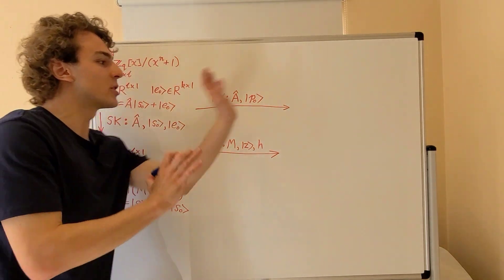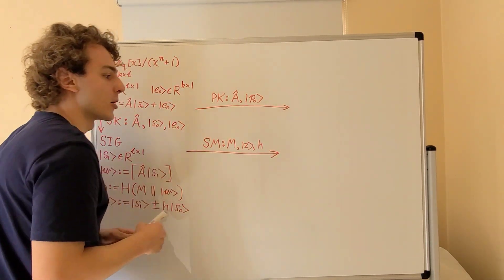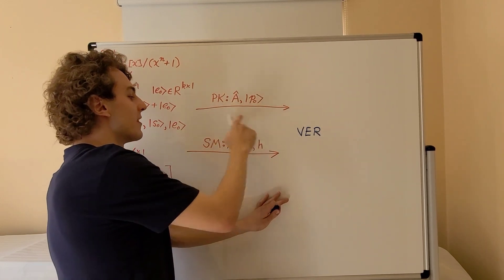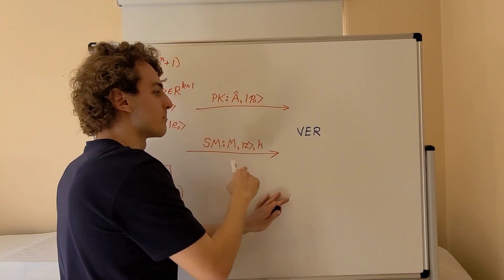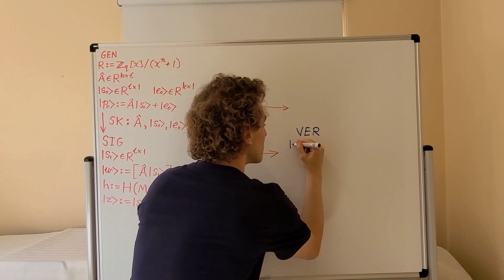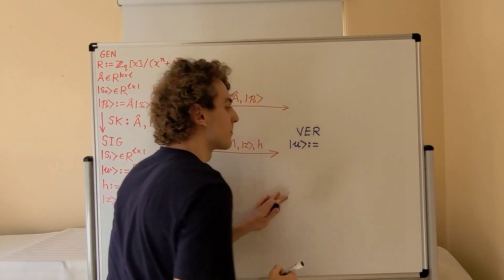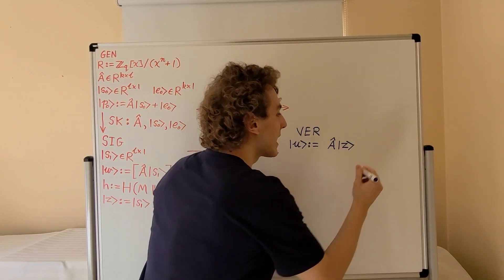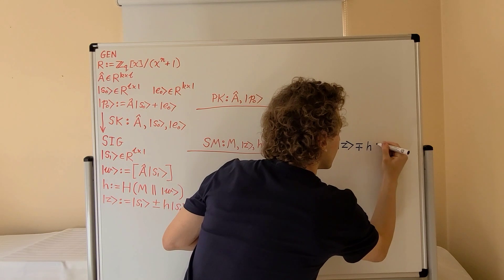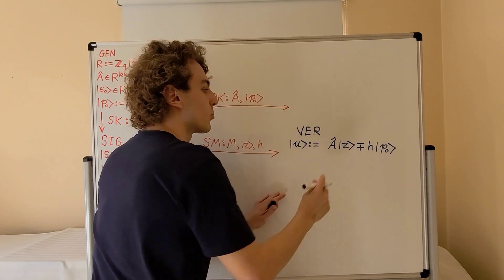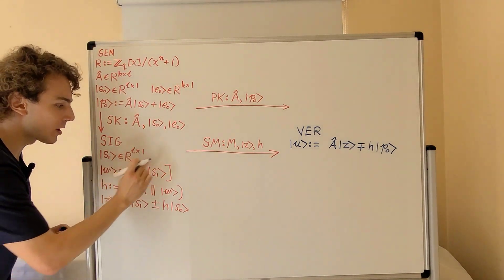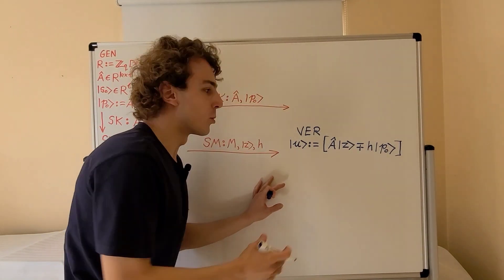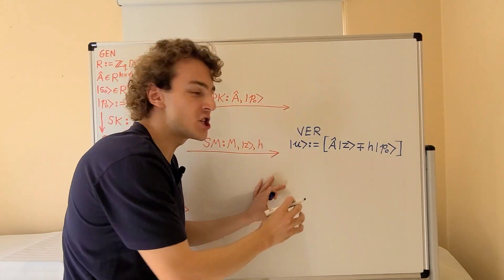Now let's look at what the other participant — the verifier — needs to do. The verifier uses the public key to verify that this is indeed the signed message. Let's define a vector U. We define U using A multiplied by Z, and then minus or plus H times P0, and we also apply the higher order bits approximation procedure — denoted by the square brackets — so we only consider the higher order bits of the coefficients of the resulting vector.